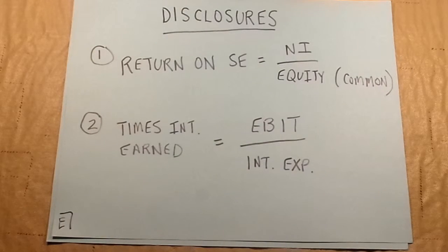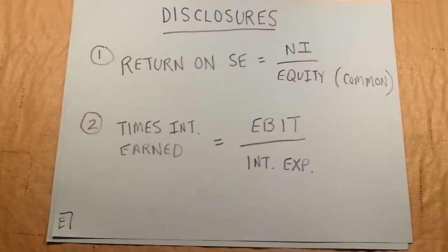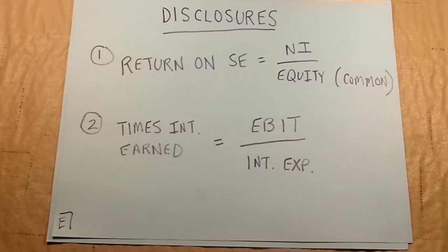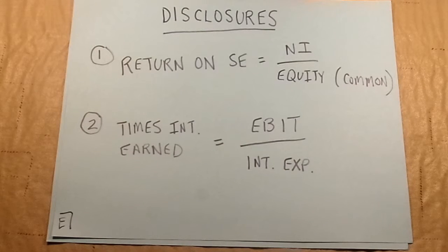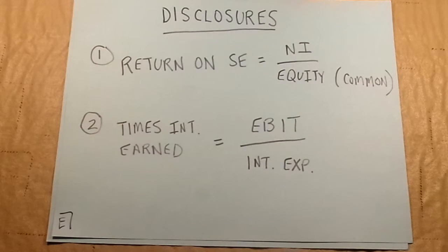This slide also covers ratios — it should have been titled accordingly. Here we have the return on stockholders' equity, which is net income divided by common equity. We also have the times interest earned ratio — a common finance acronym meaning earnings before interest and taxes (EBIT) divided by interest expense. This ratio tries to figure out how much revenue the interest expense generates — essentially determining whether it's good to have those loans.